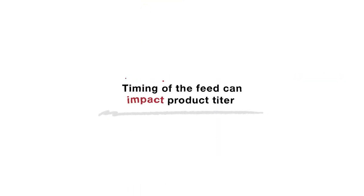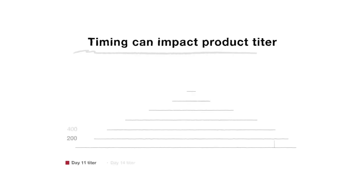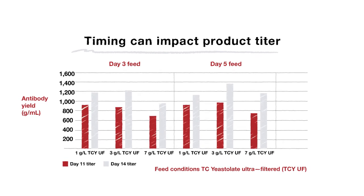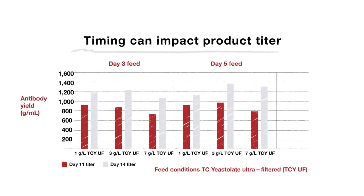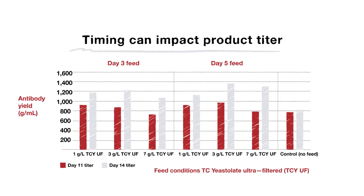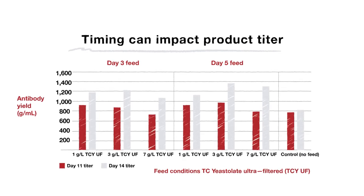This graph shows a peptone added at multiple feed concentrations, 1 gram per liter, 3 grams per liter, and 7 grams per liter at day 3 and day 5. The optimal concentration is 3 grams per liter of the peptone, fed at day 5 and collected at day 14.